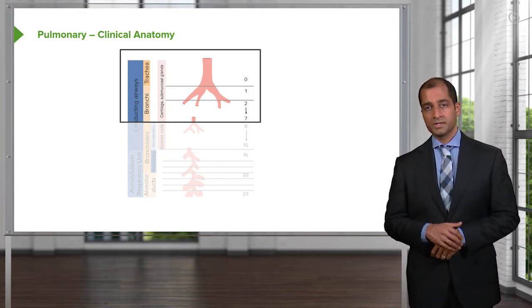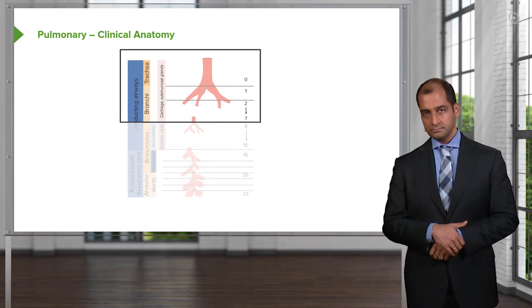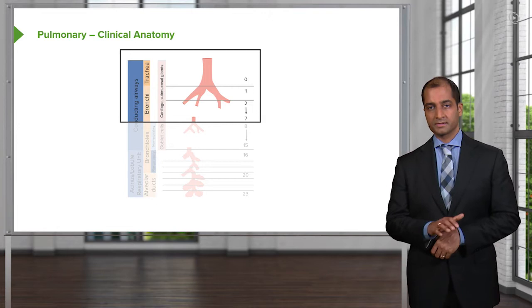It's squamous cells. So, if the columnar cell has to turn into a squamous cell, what do you call this? Good, metaplasia. You see the point here.